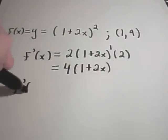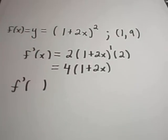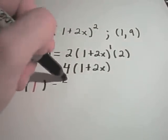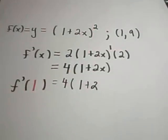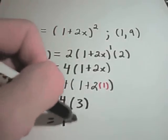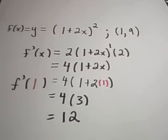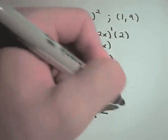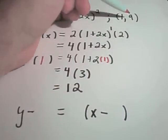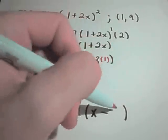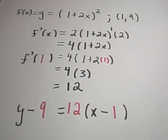We're interested in the slope at the x-coordinate of 1, so we plug 1 in: 4 times (1 plus 2 times 1). The inside gives 1 plus 2 equals 3, and 4 times 3 is 12. So the equation of the tangent line is y minus 9 equals 12 times (x minus 1). The y-coordinate was 9, the slope was 12, and the x-coordinate was 1.